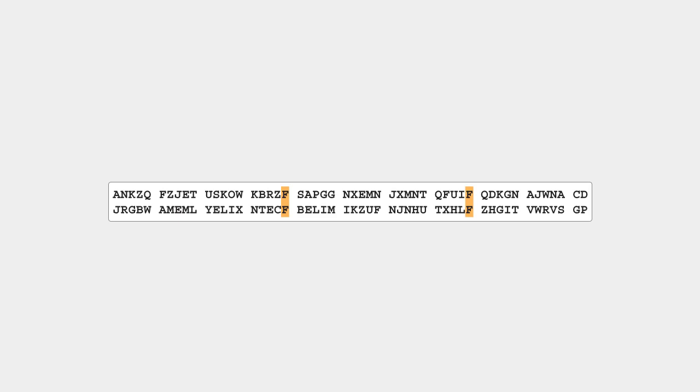Here I have enciphered the 52-letter plaintext, on the first day of spring, a young man's fancy turned to baseball, with a Belasso cipher using the keys Mars and Venus, respectively. The two equal letters are highlighted. It is accidental that both pairs of equal letters are F.